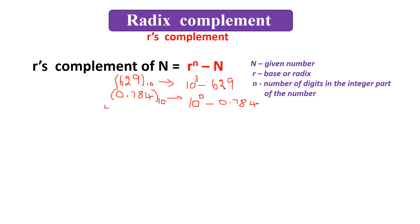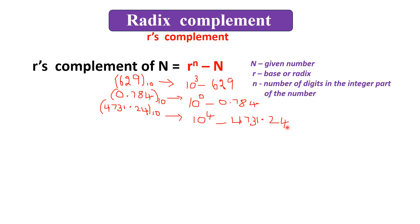Consider another example: 4731.24. The base is 10. The number of digits in the integer part is 4 (we count only the integer digits, not the fraction part). So the formula gives 10 to the power of 4, minus 4731.24. Here, N is the given number, r is the base, and n is the number of digits in the integer part.